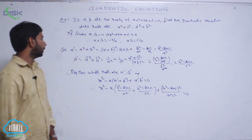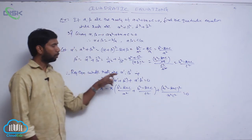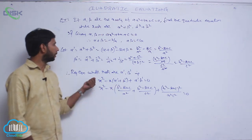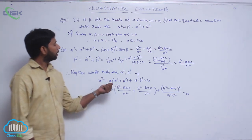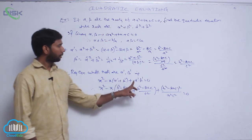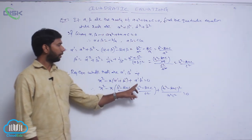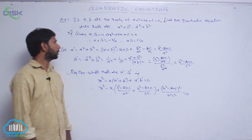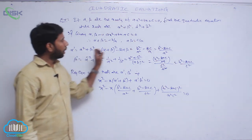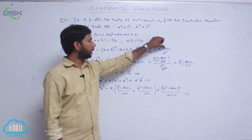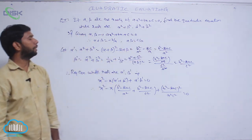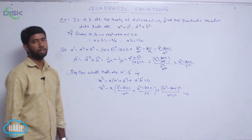The required equation whose roots are alpha' and beta' is x² - x(alpha' + beta') + alpha'·beta' = 0, where alpha' = (b² - 2ac)/a² and beta' = (b² - 2ac)/c².